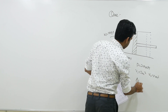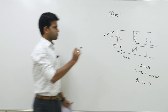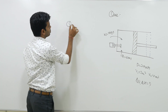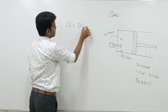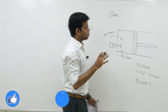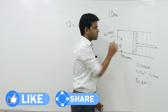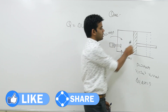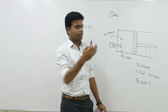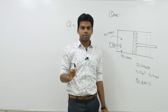We want to determine the change in internal energy and change in enthalpy. From the first law, Q equals ΔU plus W. Now the work done here has two different components: first is the paddle wheel work done on the system, and second is the displacement work due to piston movement, which is done by the system.